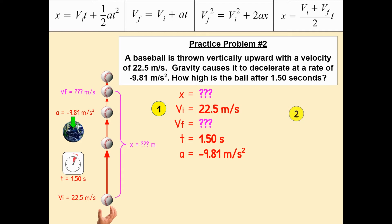Now it's time for step two — choose which of the four kinematic equations to use. We need an equation that has all the ingredients we need: initial velocity, time, and acceleration, because those are the three bits of information we have. And it needs to have x, because how high is the ball means we need to solve for displacement. So our equation needs to have x, vi, t, and a. Only one of those formulas matches these requirements, and that's this one.